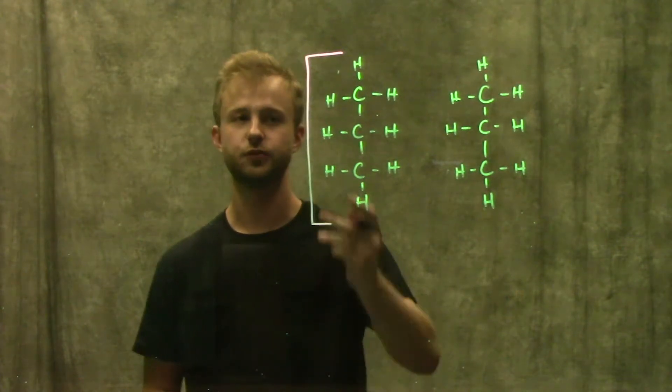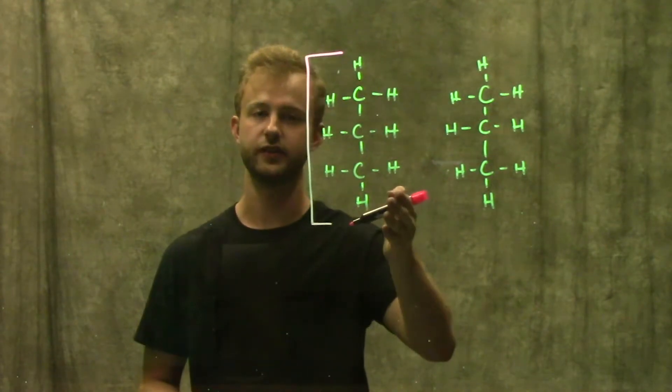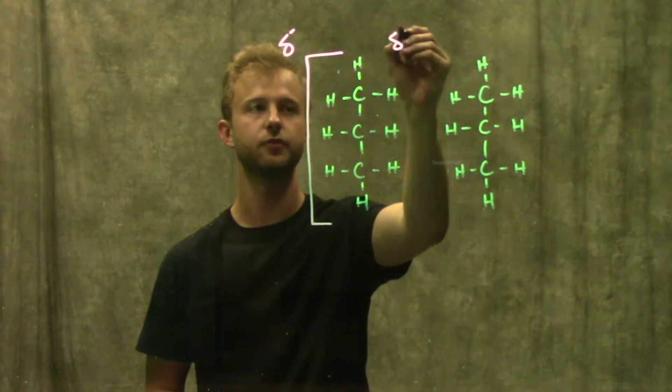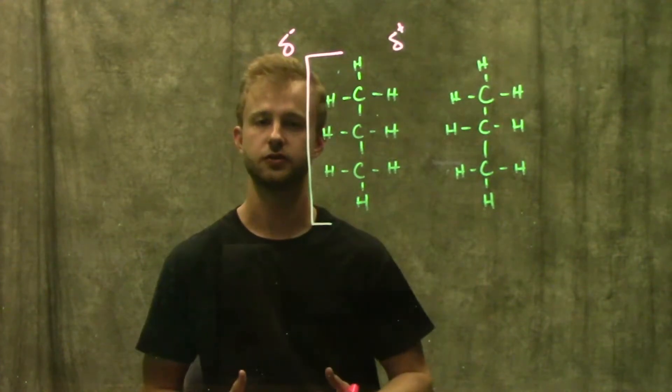When this happens, we have many more negative charges on this side than we have on this side, so that gives this a partial negative charge and this other half of the molecule partial positive charge.